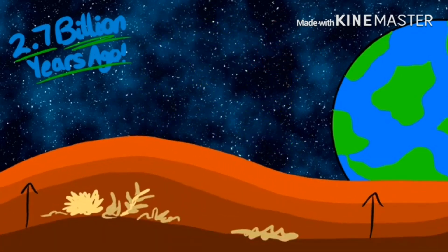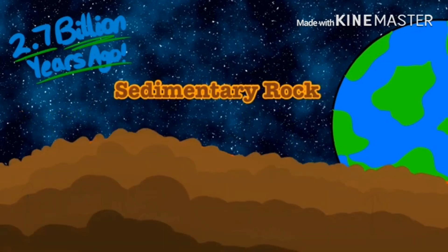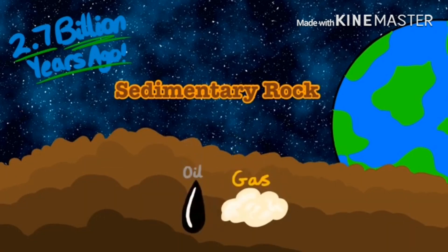Dead plants got covered with layers of sediment over many years. This then turned into sedimentary rock. Oil and gas were also formed, preventing carbon from getting back into the environment.